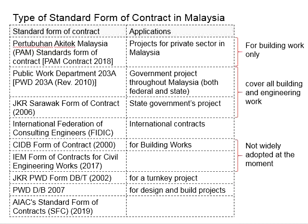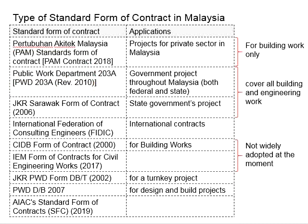The second one is the PWD contract. PWD stands for Public Works Department, which is also known as Jabatan Kerja Raya, or JKR. We call it PWD 203A Revision 2010. This is commonly used for government projects throughout Malaysia.